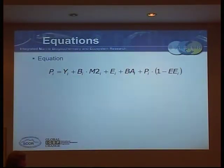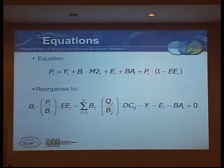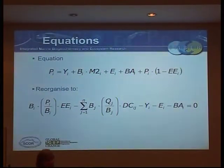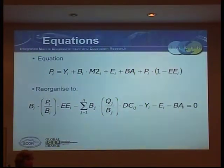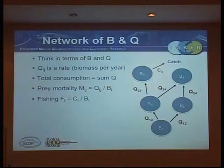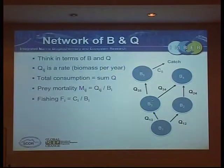This is the basic equation behind Ecopath. They often reorganise it to make it easy to solve. Basically what you get is a set of simultaneous equations. It's a pretty straightforward process - if you're someone who likes to dig in, you can unpack the code. You can share the repository with them, it's open source software, or you can actually retype it yourself because it's a pretty straightforward piece of mathematics.